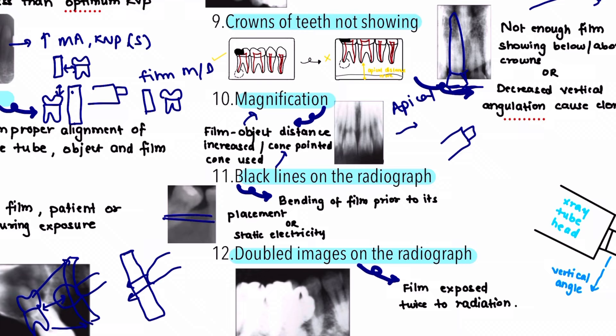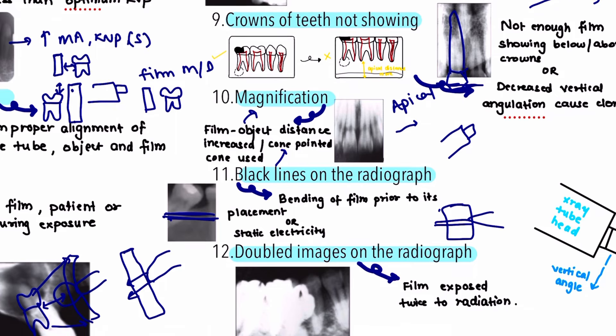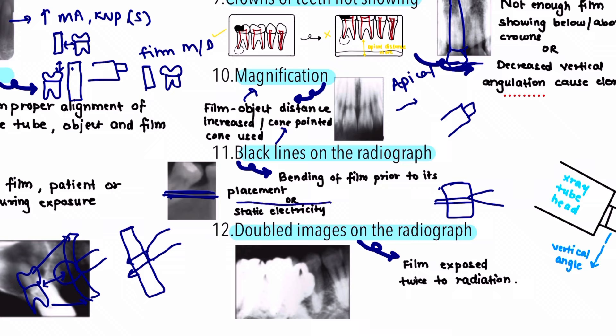The next projection error is black lines on the radiograph, caused by bending of the film prior to its placement. If the x-ray film is bent at a very acute angle, it leads to a linear crack that results in distortion of the film emulsion, producing black lines on the x-ray. The correction is to avoid bending or adapting the film as much as possible while placing it in the oral cavity.